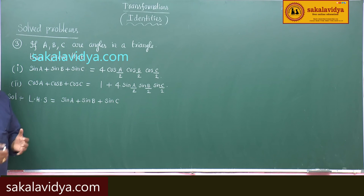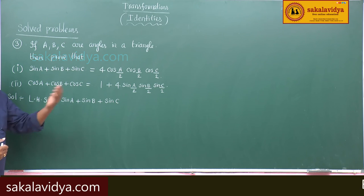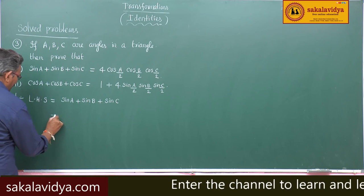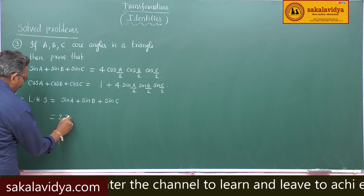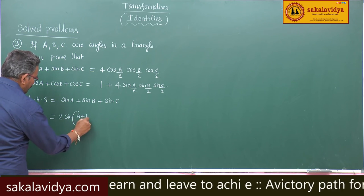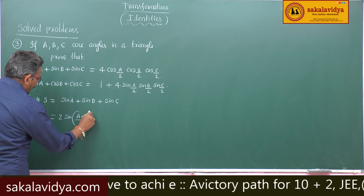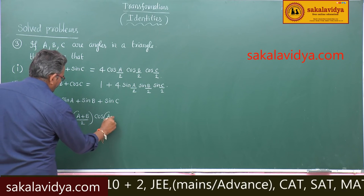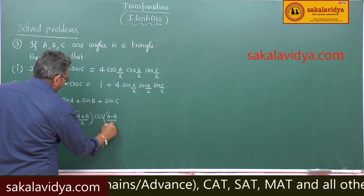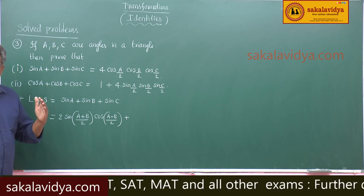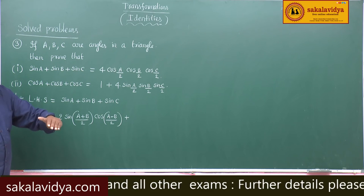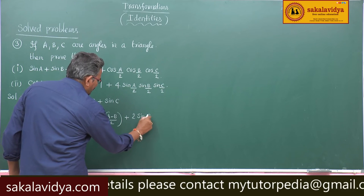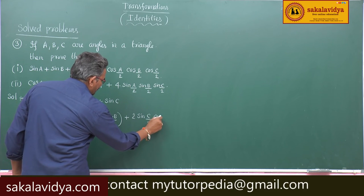The formula for sinC + sinD is 2sin((C+D)/2)·cos((C−D)/2). So the first two terms become 2sin((A+B)/2)·cos((A−B)/2), and sinC can be written as 2sin(C/2)·cos(C/2).